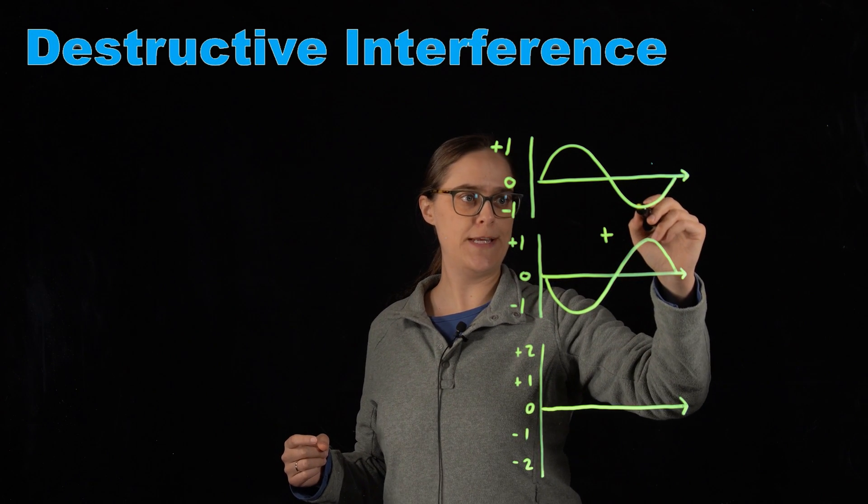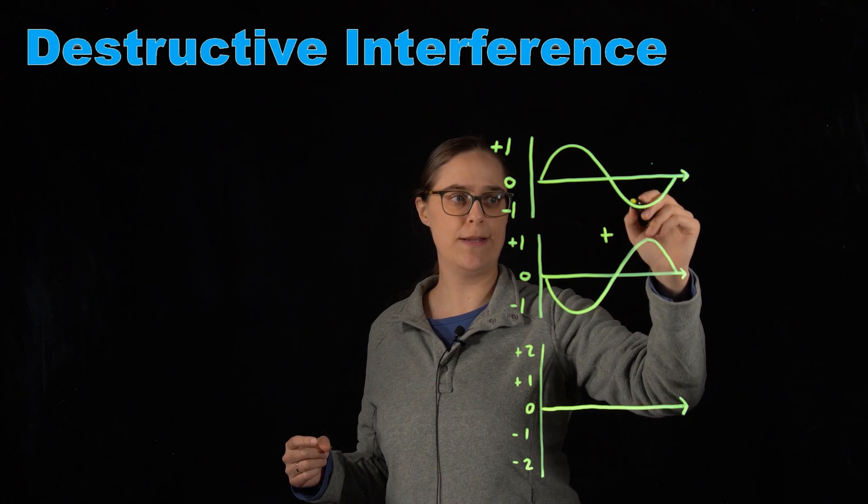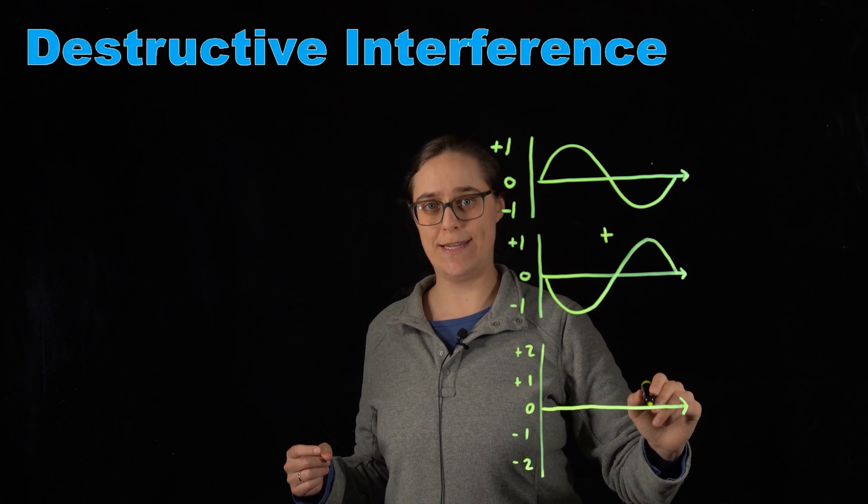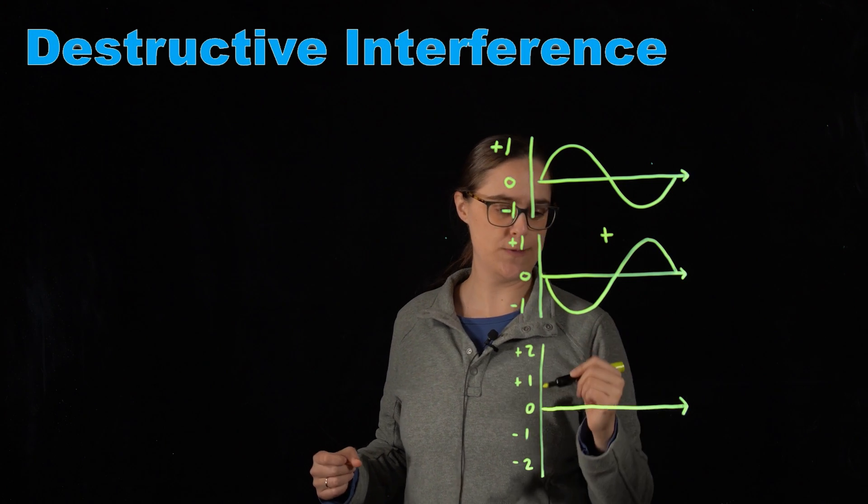At this valley of negative 1, we are aligned with a peak, amplitude positive 1. Negative 1 plus positive 1, once again an amplitude of 0. And at the end, 0 plus 0 equals 0.